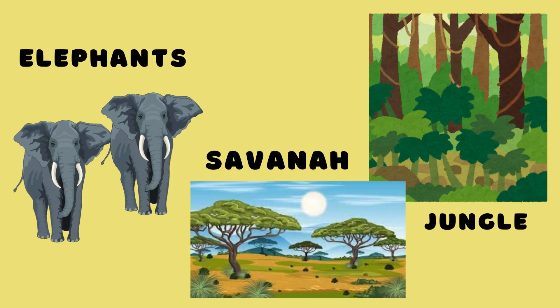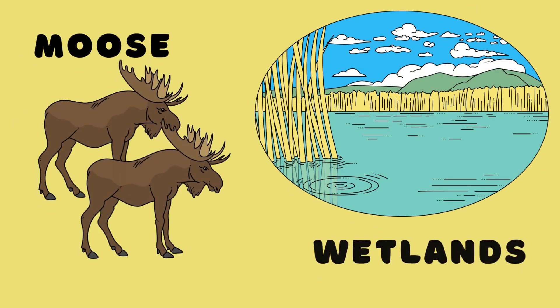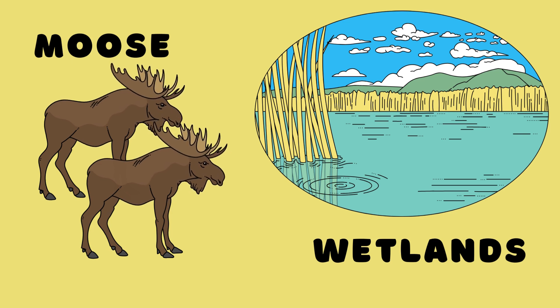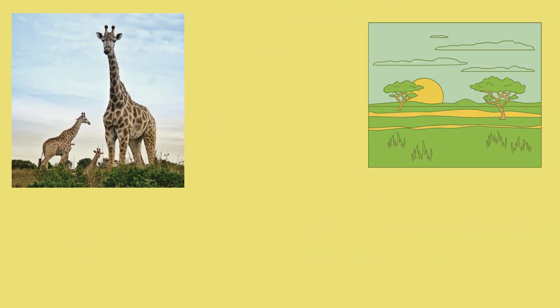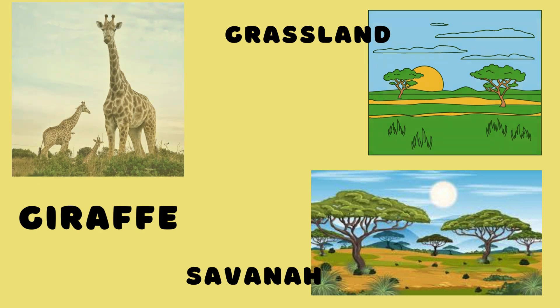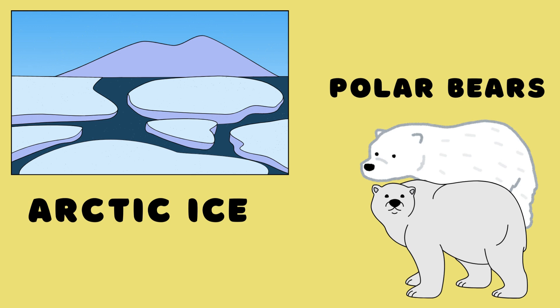Elephants live in savannah or jungle. Moose lives in wetland or forest. Giraffes live in grasslands or savannah. Polar bears live in arctic ice.